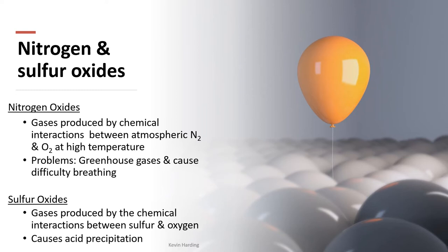Sulfur oxides are produced by chemical interactions between sulfur and oxygen at high temperatures. They have a very distinct sulfurous smell, and a secondary pollutant H2S produces that rotten egg smell. If water vapor reacts with these oxides, a secondary pollutant of H2SO4 can form, leading to acid precipitation.